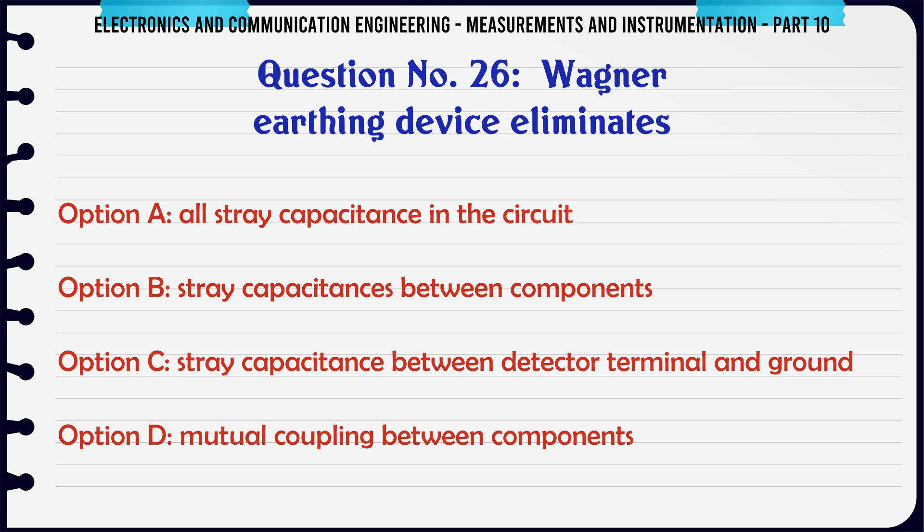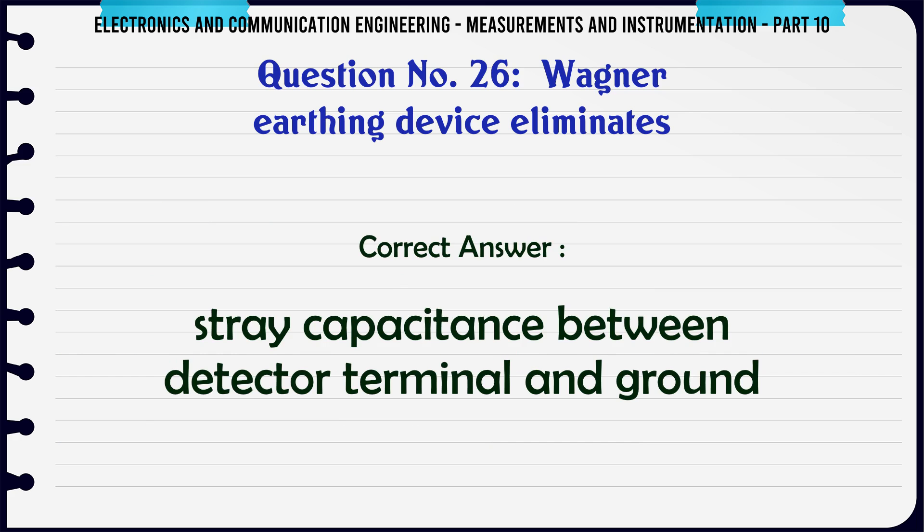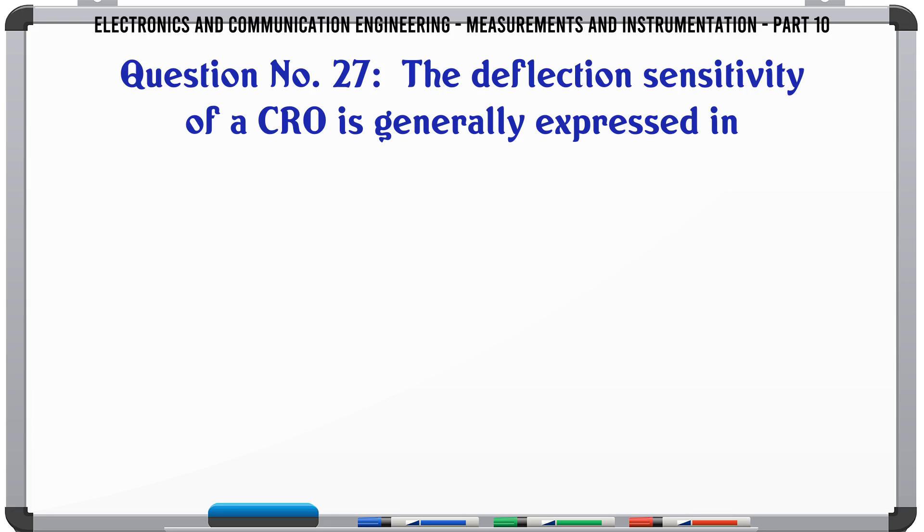Wagner earthing device eliminates: A) all stray capacitance in the circuit, B) stray capacitance between components, C) stray capacitance between detector terminal and ground, D) mutual coupling between components. The correct answer is stray capacitance between detector terminal and ground.